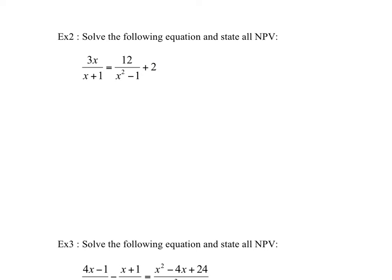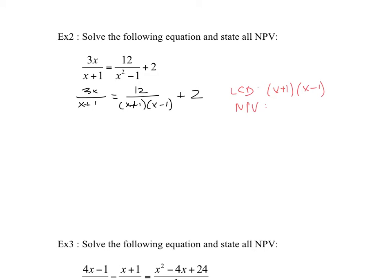In the next example, first find the lowest common denominator — but before that, make sure you have all the factors in the denominator. One denominator isn't completely factored yet, so we factor it: we have 3x over (x plus 1) equals 12 over a difference of squares, which factors as (x plus 1)(x minus 1), plus 2. The LCD is (x plus 1)(x minus 1). Non-permissible values: x cannot equal plus or minus 1.